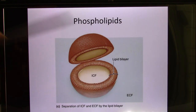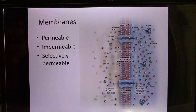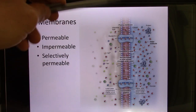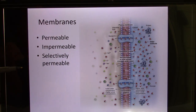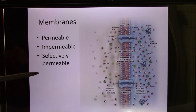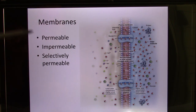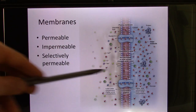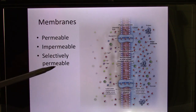Outside we have ECF, extracellular fluid — they're all water. That's your cell membrane, which is made of phospholipid. It turns out it's not permeable to all molecules — we call it semi-permeable. So its permeability depends on the molecule. Some molecules can go through; others cannot. So we call it selectively permeable.